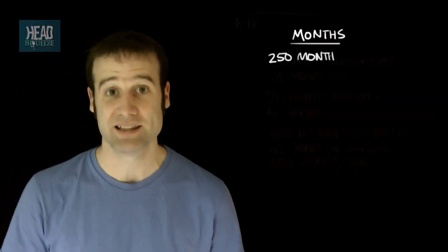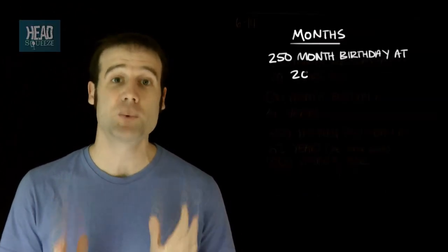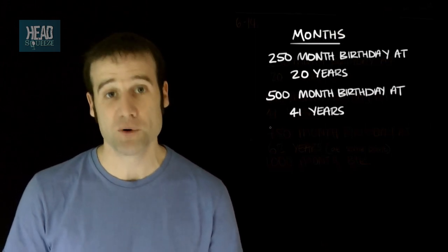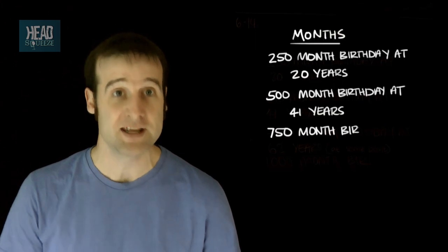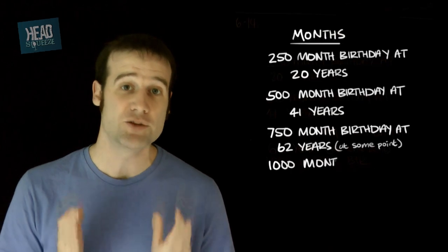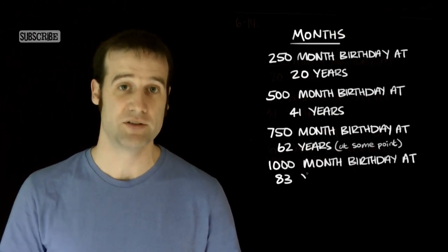Here we go. We'll start with months because that's the largest time interval. You will be 20 when you have your 250 month birthday. You'll be 41 when you turn 500 months. At some point when you're 62, you will pass 750 months. And when you're 83, you'll have your 1,000 month birthday.